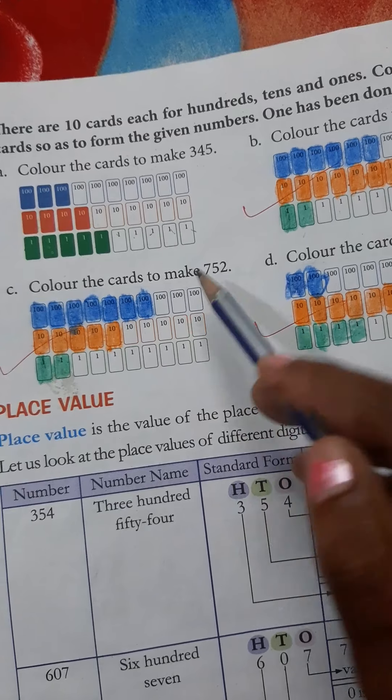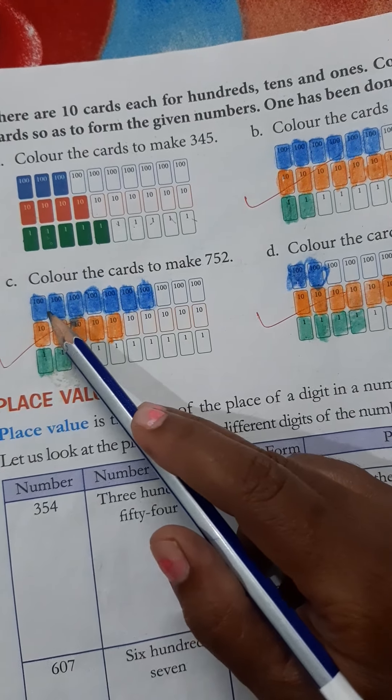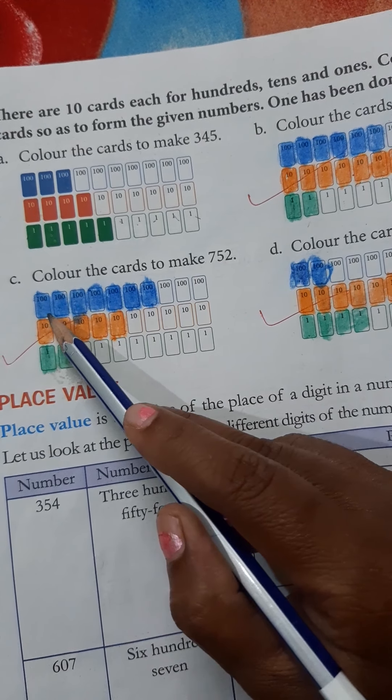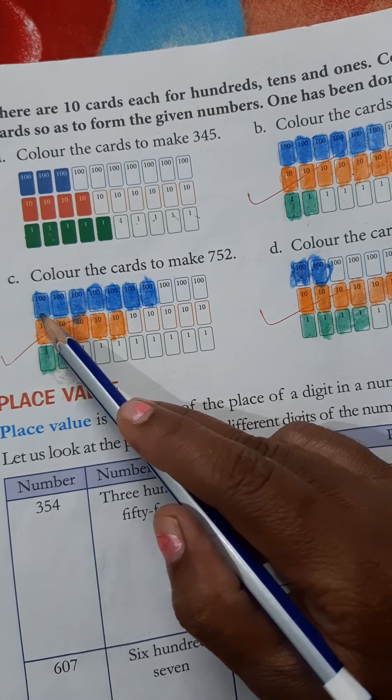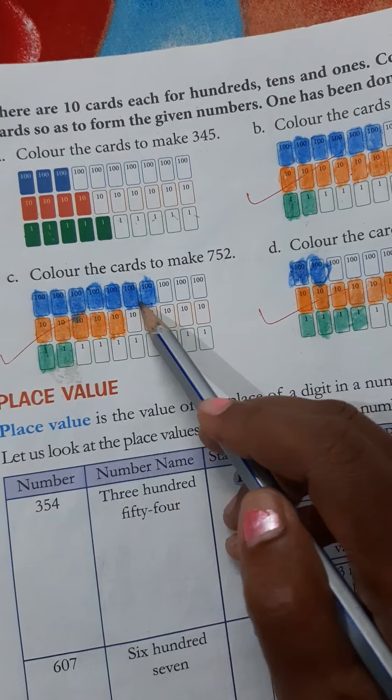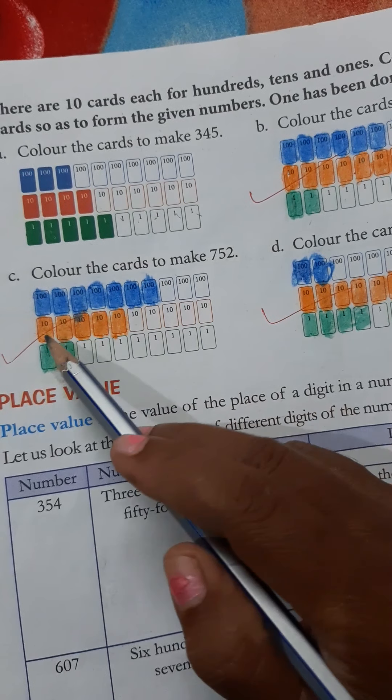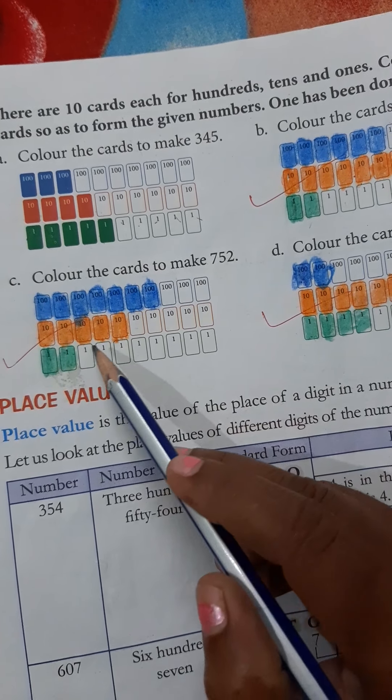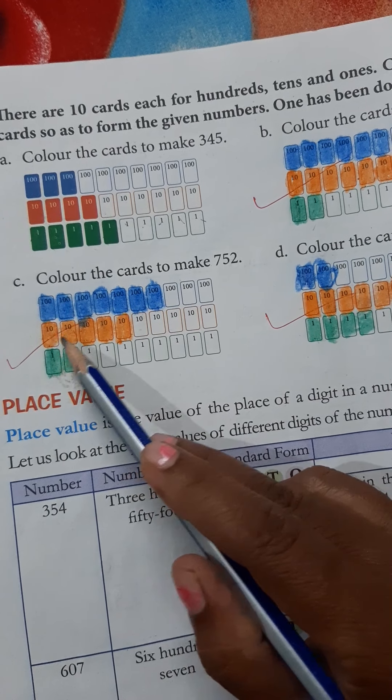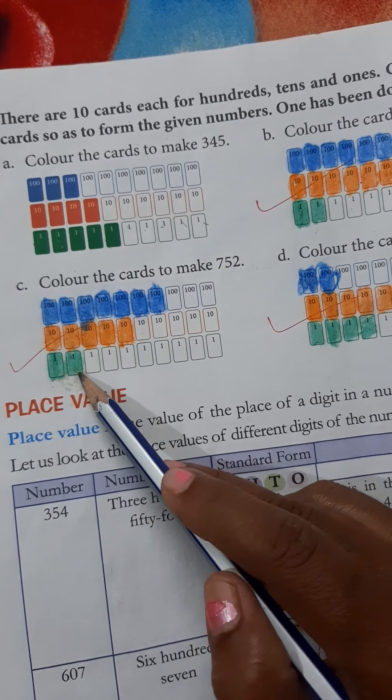Number C, make 752. 1, 2, 3, 4, 5, 6, 7. 7 cards. Each card is 100, so 7 cards mean 700. Second line: 1, 2, 3, 4, 5. 5 cards with orange color. 5 tens means 50. Then, 2 cards with green color. 1, 2.